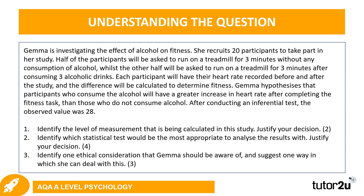You have three questions again. Question one: identify the level of measurement being calculated in this study and justify why you have chosen it — two marks. Question two: identify which statistical test would be most appropriate to analyze the results and justify your decision — four marks. Question three: identify one ethical consideration Gemma should be aware of and suggest one way it can be dealt with — three marks. Pause the video now, have a go, and then press play when you're ready.